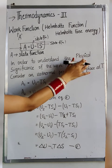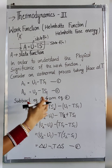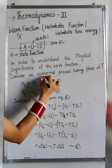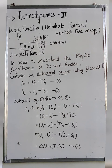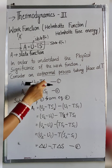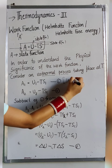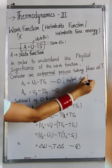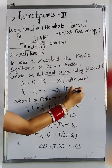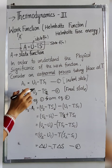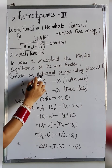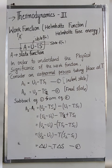To understand the physical significance of the work function, we take any isothermal process taking place at constant temperature T. For the initial state, A1 is equal to U1 minus TS1. For the final state, A2 is equal to U2 minus T times S2. This T remains the same because we are considering the isothermal process, in which temperature does not change during the whole process.